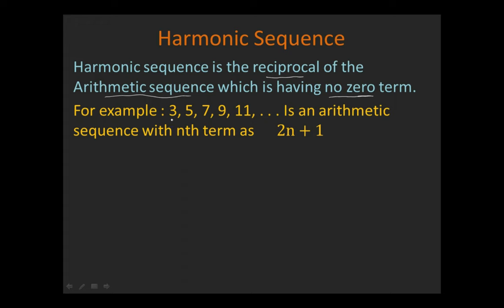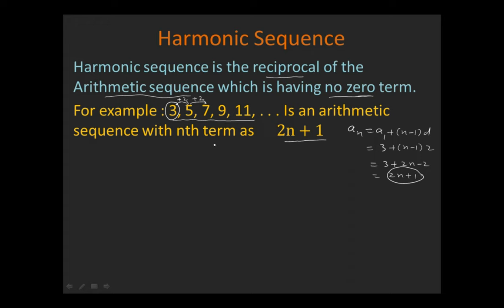For example, consider this arithmetic sequence which has no zero term. Its general term is 2n plus 1. The general term is found as: an = a1 + (n−1)d. Here a1 is 3 and d is 2, because 2 is added each time to get the next term. Putting these values gives 2n minus 2 plus 3, which simplifies to 2n plus 1. So this is the general term of the arithmetic sequence.